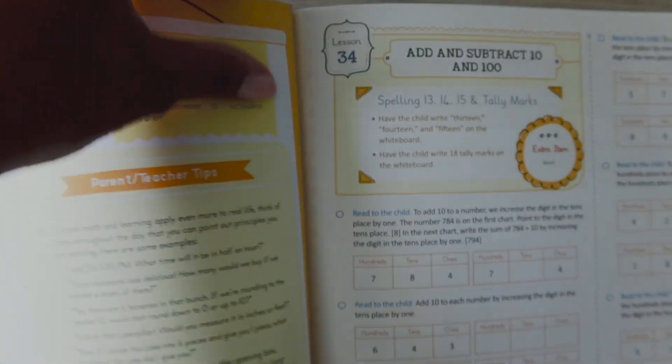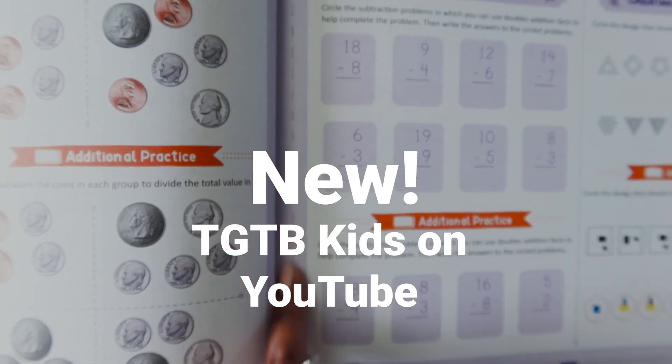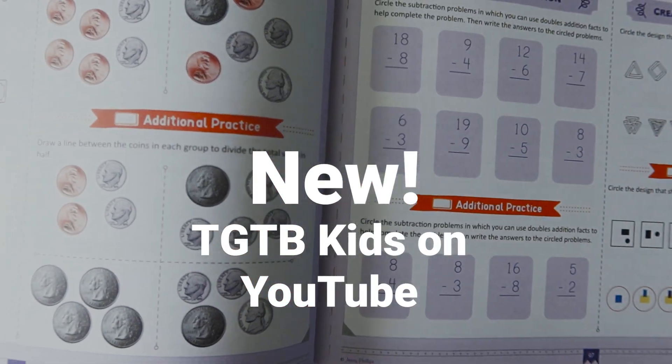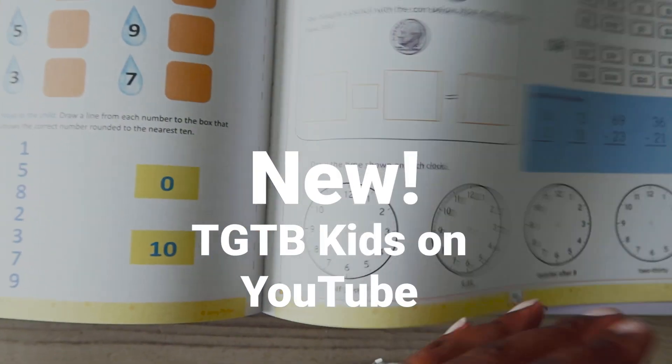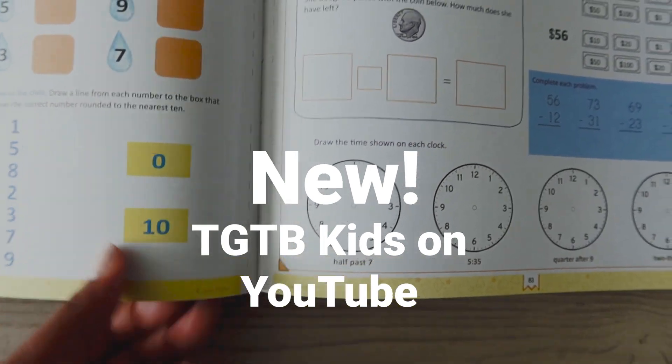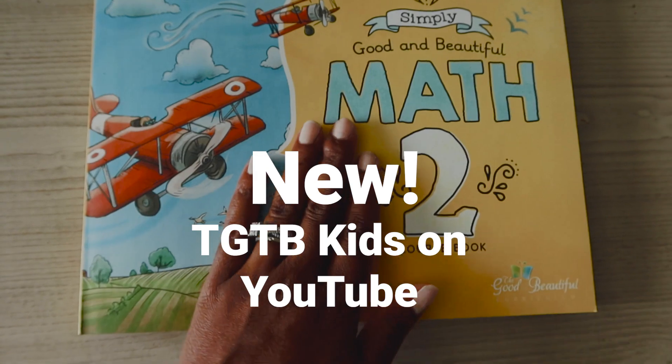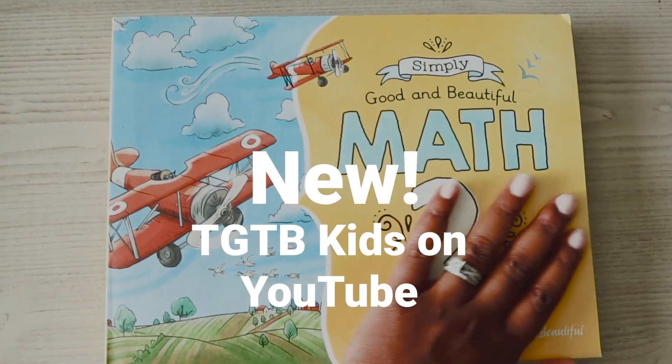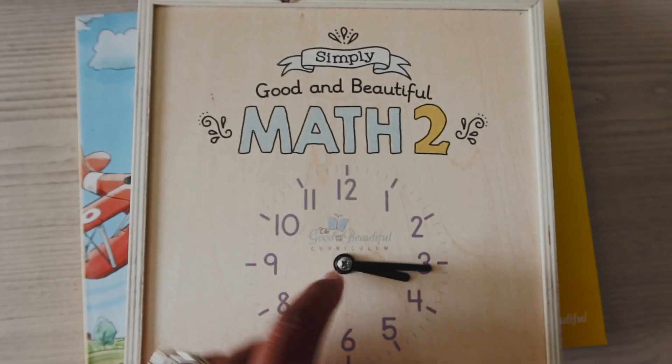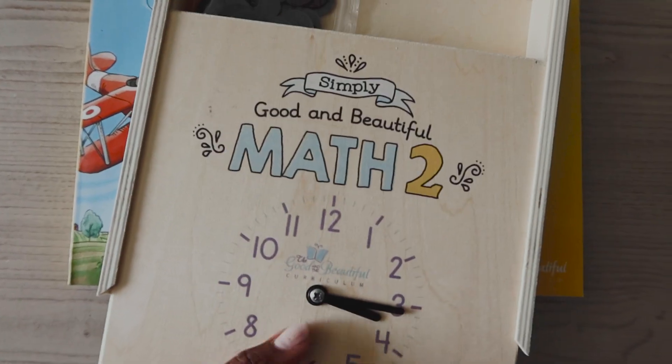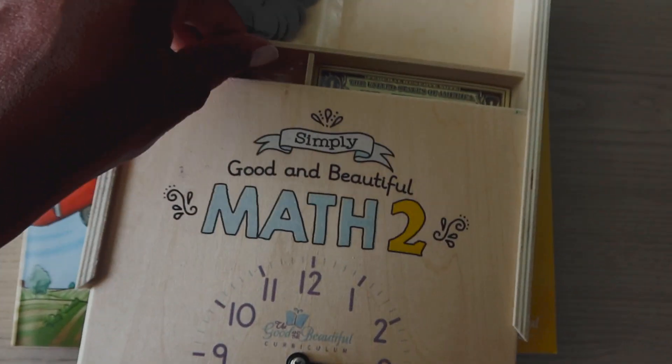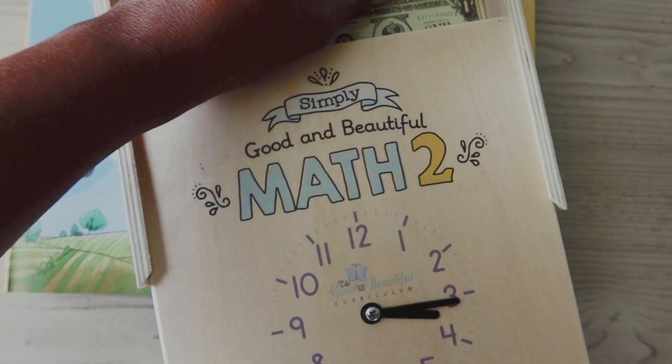It also is perforated here so you can tear the pages out. So if you wanted to do like a binder setup or a folder setup, you could tear the pages out and give the child whatever it is that they need. Love that. You guys already know the Good and the Beautiful just works well for my family. It has worked well. We've used other things in the past. It just works really well for my kids and so it came with a box of manipulatives. Let's go ahead and open it.